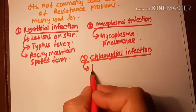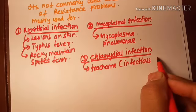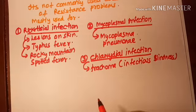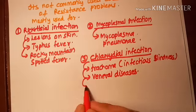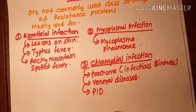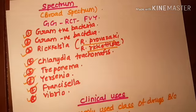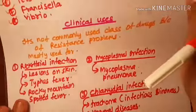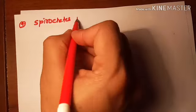It can be used against chlamydial infection, including trachoma — which is an infectious blindness — as well as venereal disease and pelvic inflammatory disease (PID) in women. It can also be used against spirochete infections.